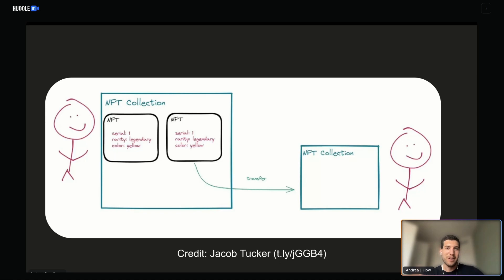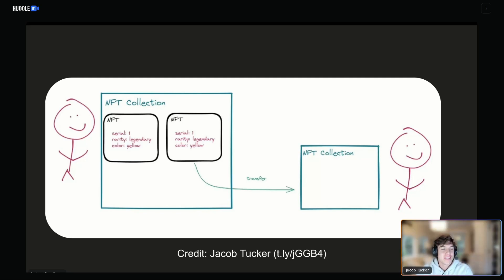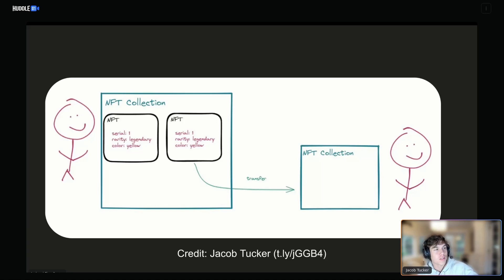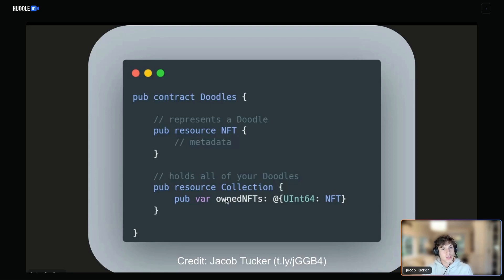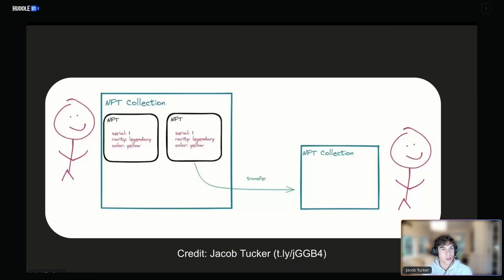Jacob can now seamlessly flow into the Cadence section of the workshop. This image is showing you what it's like for users to hold NFTs in Cadence. The awesome person on the left has an NFT collection, and that NFT collection actually contains NFTs. That representation is what it actually looks like in code as well — we're going to define a collection resource that actually holds the NFT resources itself. There's no weird mapping — it actually does hold the resources, and we'll store that collection inside of our account. In Cadence, resources can own resources themselves, so there is built-in ownership into the language.